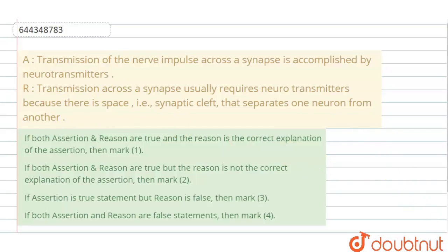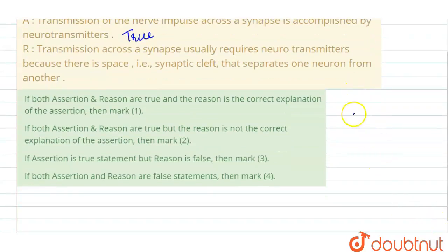So let's first discuss the assertion. The assertion is: transmission of a nerve impulse across the synapse is accomplished by neurotransmitters. Yes, this statement is clear. The assertion is true.